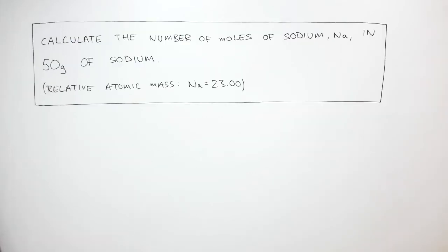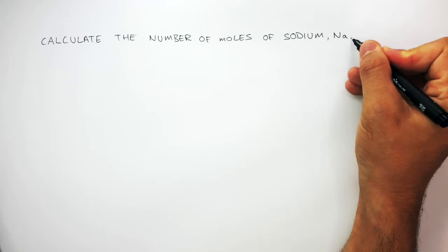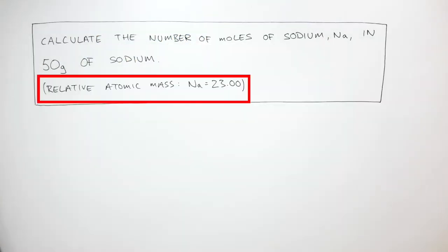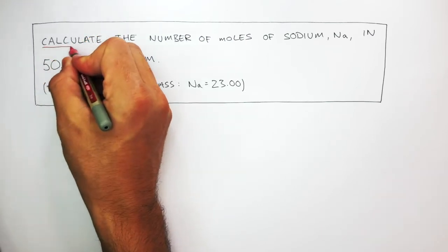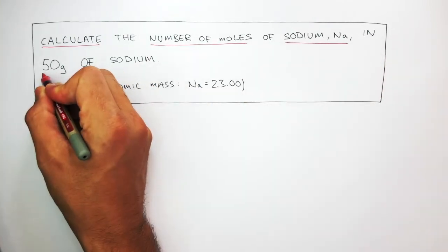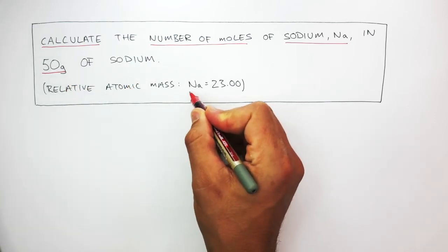Here's the kind of exam question you could potentially answer using this equation. The question is asking you to calculate the number of moles of sodium, Na, in 50 grams of sodium. In the exam, you will always be given the relative atomic masses, or you can find that data in the periodic table. We're given an AR of 23.